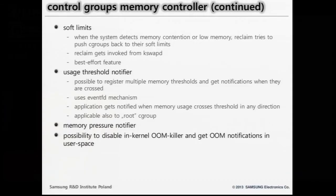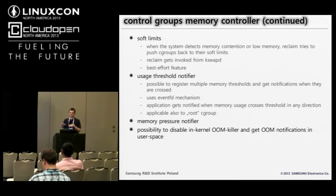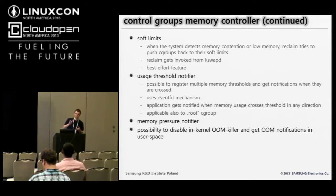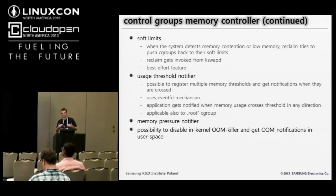We also have soft limits. Normal memory limits are called hard limits, and when a set of tasks exhausts their limit, new processes will be killed because there won't be enough memory. But soft limits are usually set below hard limits, and in case of memory pressure or running low on memory, the system will try to reclaim as much as possible from that cgroup to decrease memory usage closer to the soft limit. Reclaim means trying to free memory from caches or trying to put pages to swap.